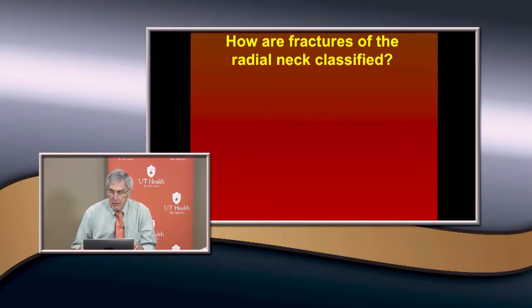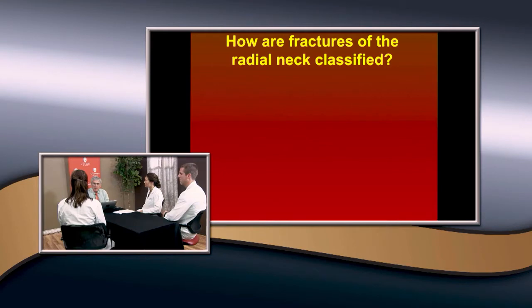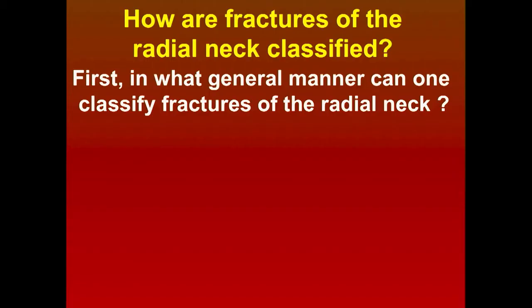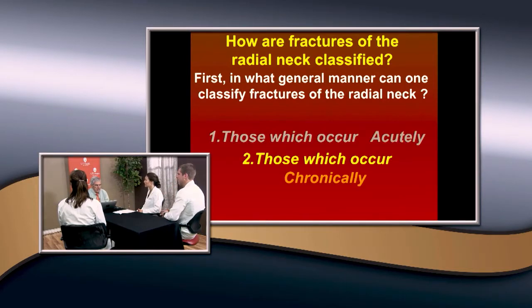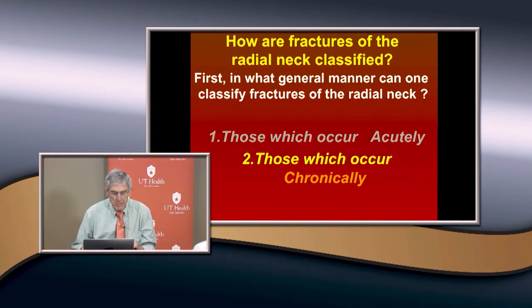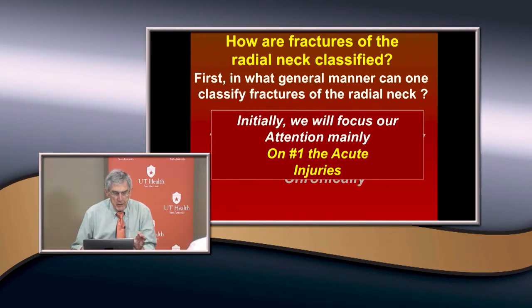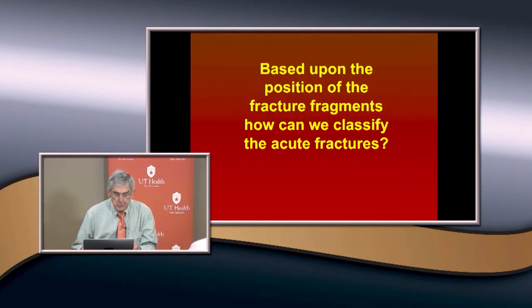Classification of radial neck fractures is important because it tells you three things: the structure of the fracture, the treatment, and the possible complications. In general, fractures can be classified as acute — which is most common — or chronic. We're mainly going to focus on acute injuries. We classify them based upon the position of the fracture fragments.